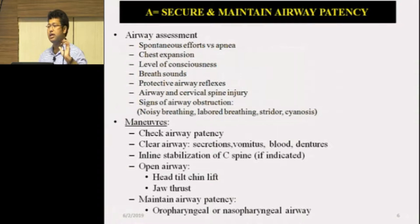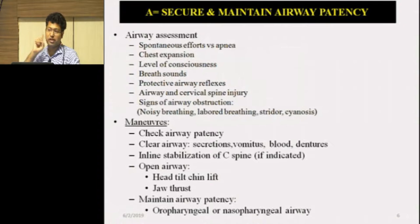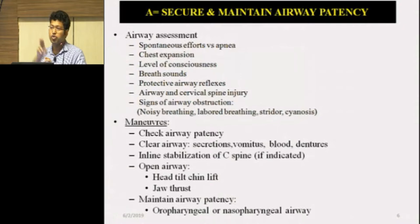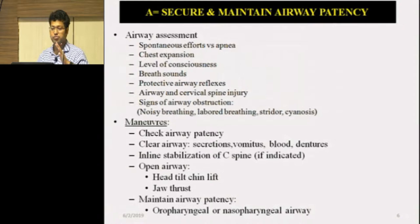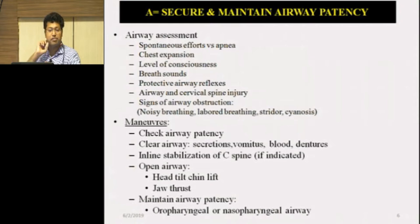In trauma settings, whenever you assess the airway, protect the cervical spine. The upper cervical spine contains the respiratory center. Manipulation can cause the odontoid process of C2 to damage the upper cervical cord and medulla, and the patient can die in front of you. This applies not only in trauma, but also in rheumatoid arthritis patients with subluxations and in severe osteoporosis patients.